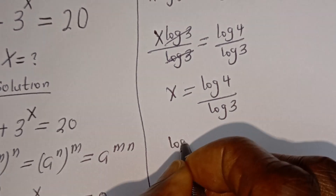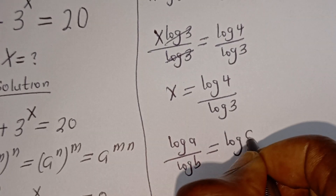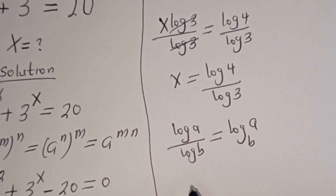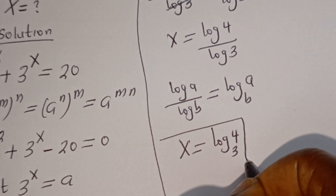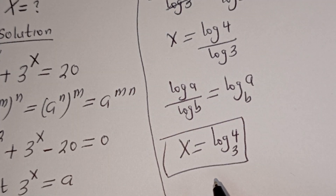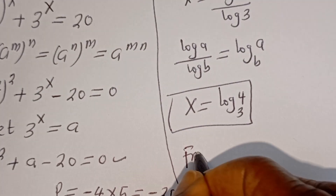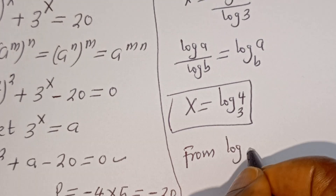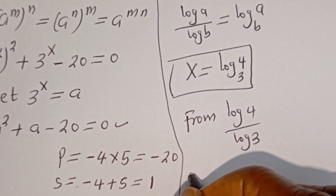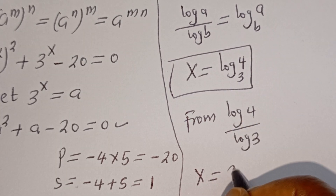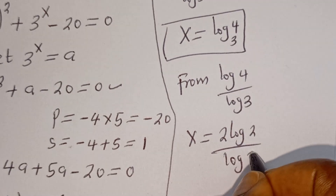Take note that if you have log A divided by log B, this is equal to log A base B. Therefore this can be written as x equals log 4 base 3. This is the final answer. If we want to use a calculator, we can express this as log 4 divided by log 3.